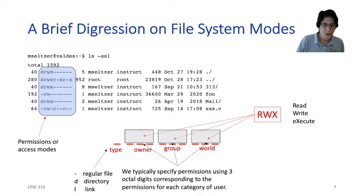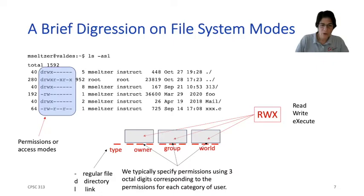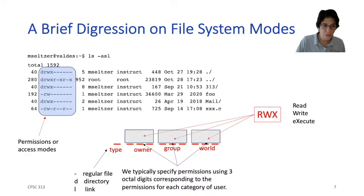These objects are represented as 10 characters, and each of those characters corresponds to a bit. The type is actually more than one bit — it tells you what kind of thing this object is. The kinds of things you might have are regular files, which just show a dash. Some files are directories or folders — that's where you see the D.